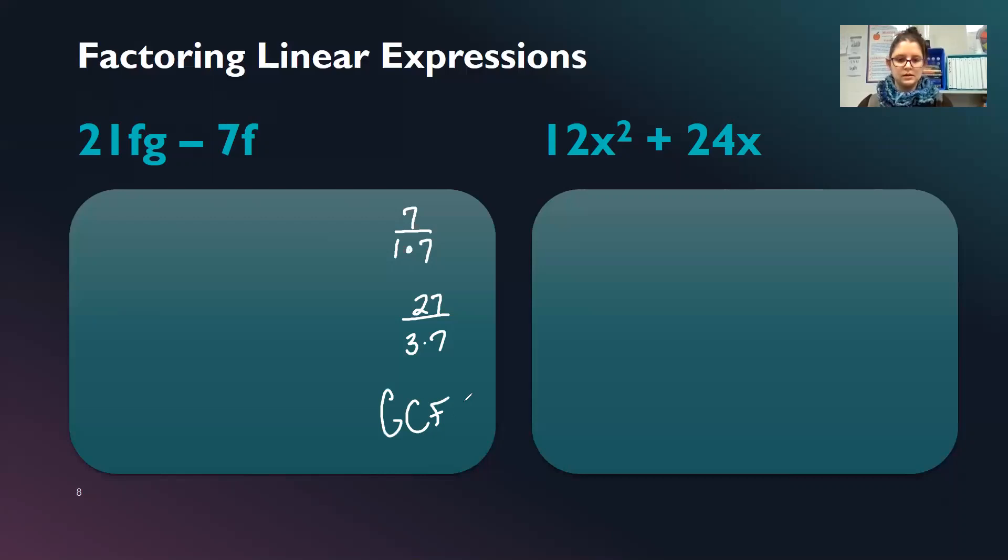So my GCF is 7. So I'm going to put that on the outside of my parentheses. But then I want to check my letters. Do I have any letters that are found in both terms? And they both have an F. I'm going to put this F outside the parentheses as well. So 21FG divided by 7F. My F's will go away. So 21 divided by 7 gives me 3. And just the G is remaining. So 3G. 7F divided by 7F. The F's cancel each other out. 7 divided by 7 gives me 1. This is a subtract. So minus 1. We can double check by distributing. 7 times 3 is 21F. And bring down my G. 7 times negative 1 is negative 7. Bring down my F. And that's what we started with.